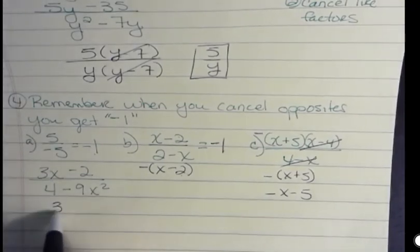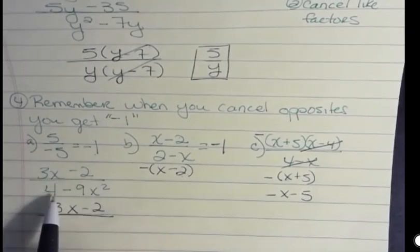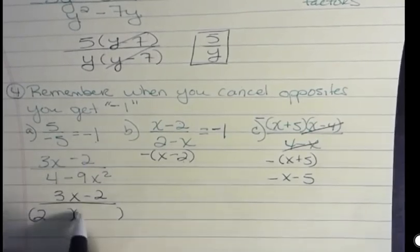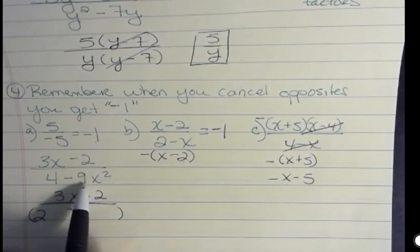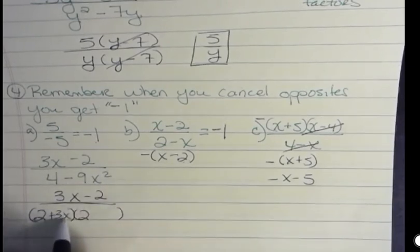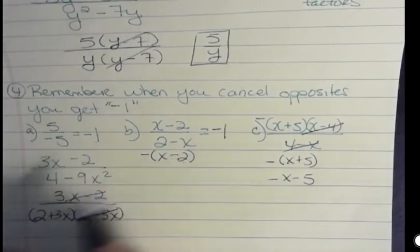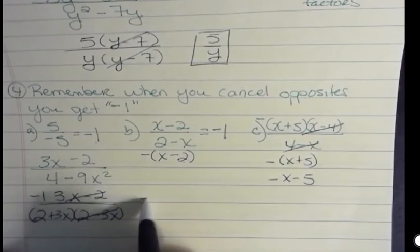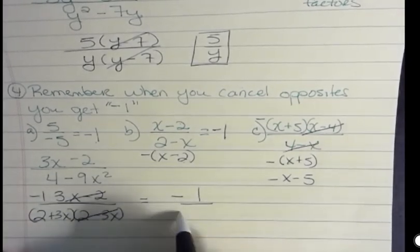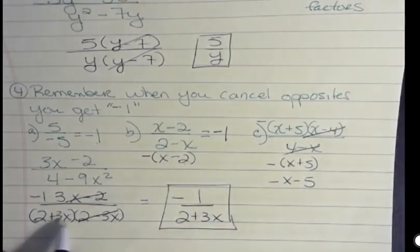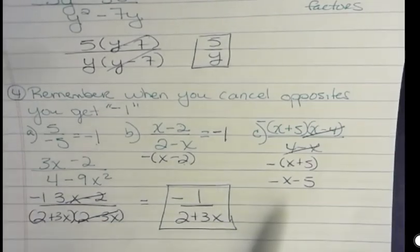What about something like this? If I factor the denominator again, that's a difference of squares. Difference of squares, we say what's the square root of this? The positive square root is 2. And the square root of this is 3x. So I have plus 3x and minus 3x. And what we want to recognize here is that (3x - 2) and (2 - 3x) are opposites because the negative 2, positive 2, positive 3x, negative 3x. So when they cancel, we get negative 1. And that means that the simplified version of this is -1 over (2 + 3x).